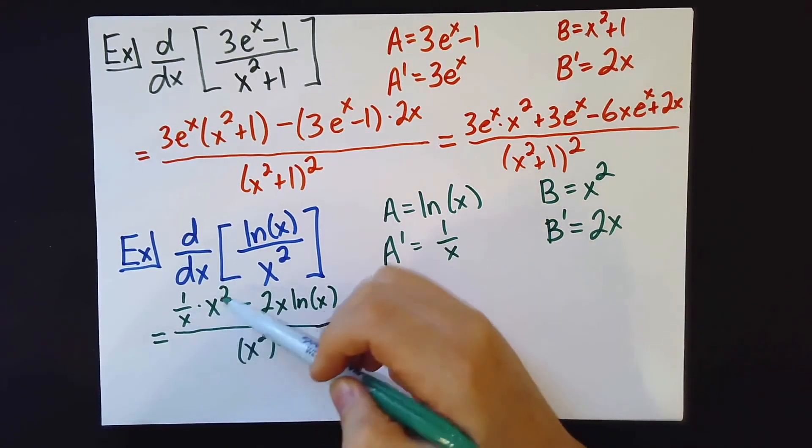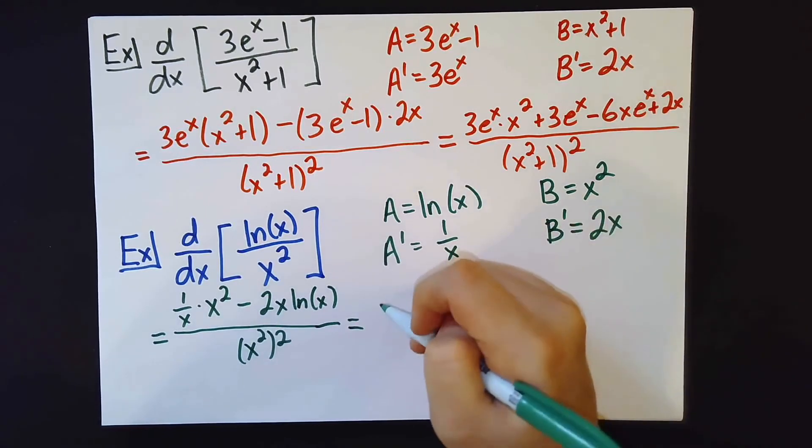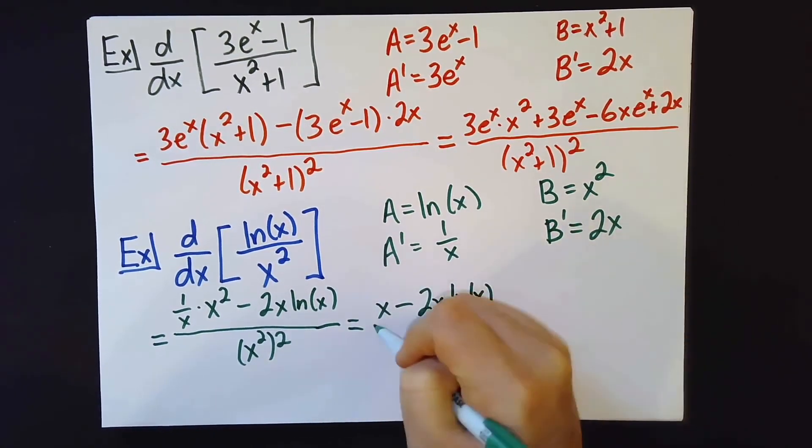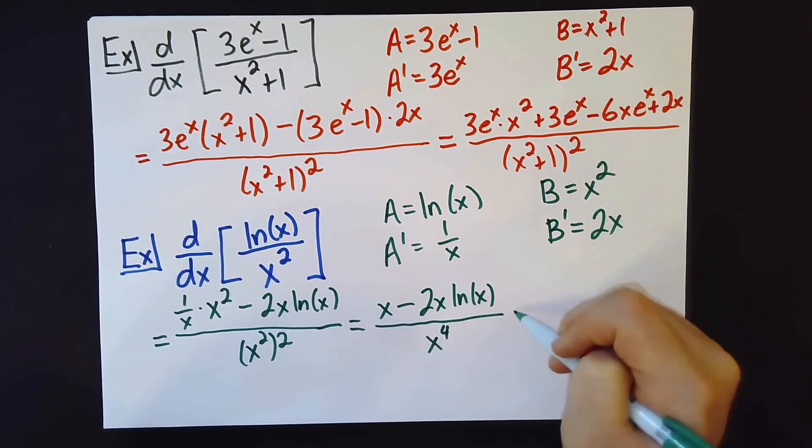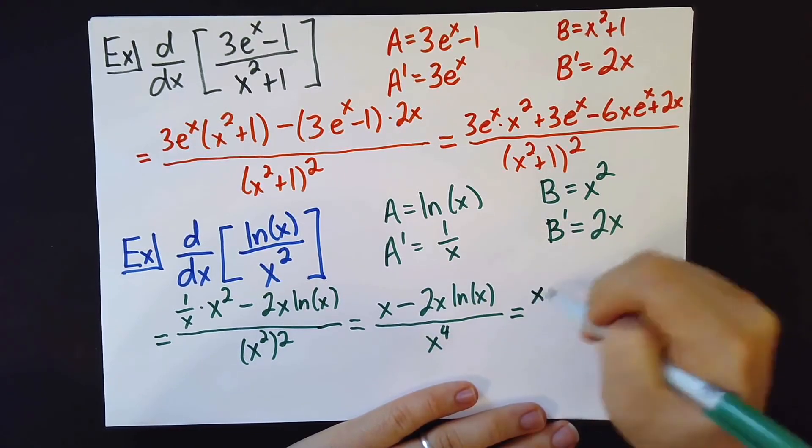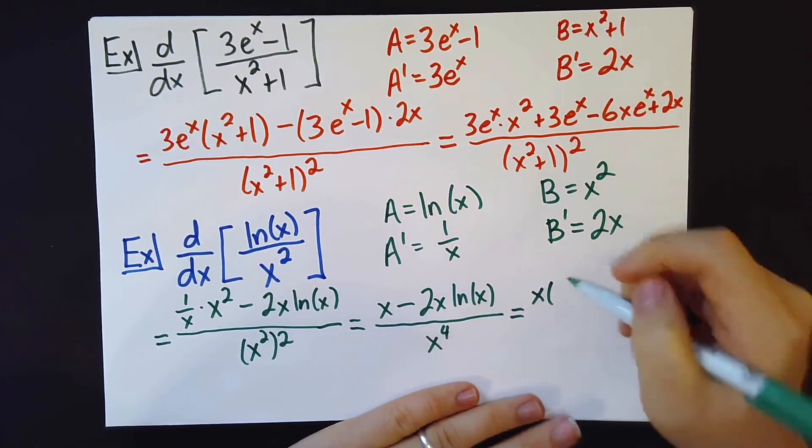Now, in fact, actually 1 over x times x squared is actually just x. Now, if I look closely here, I can actually simplify this more, because I can, in fact, factor an x out of the numerator.